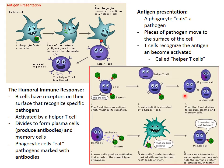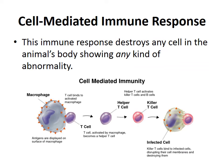The plasma cell spits out antibodies specific to the bacteria found. Those antibodies attach to the bacteria, and then a phagocyte comes along and eats the antibody-marked bacteria, eliminating it. The memory cell waits, and if the same antigen appears again, it immediately remembers and restarts the process. The whole immune system is just amazing.